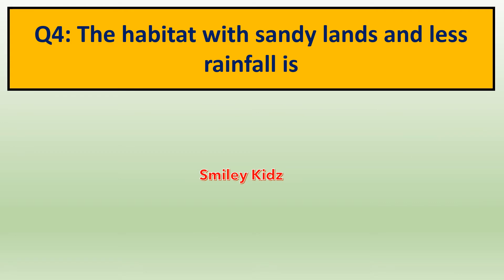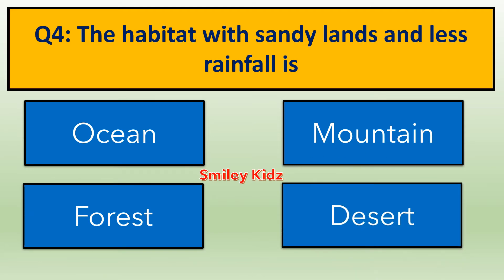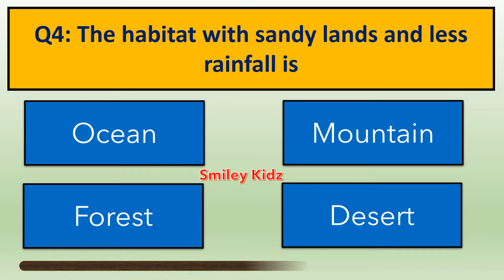Question number 4. The habitat with sandy lands and less rainfall is — options are: A. Ocean, B. Mountain, C. Forest, D. Desert. Your time starts now. Your time is up. The right answer is Desert. The habitat with sandy lands and less rainfall is Desert.